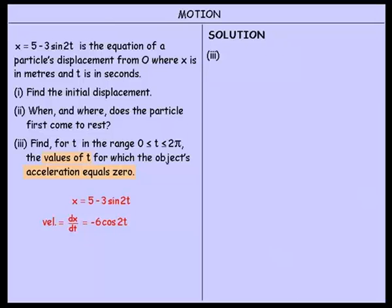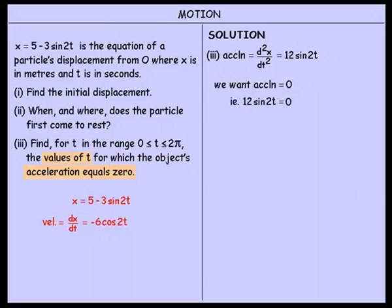Question 3: we're asked to find the values of t for which the acceleration equals 0. The acceleration is the second derivative. Looking at our velocity — the first derivative — if we find the derivative of that, we get 12 sine of 2t. Setting that equal to 0 gives 12 sine 2t equals 0. Dividing by 12 gives sine of 2t equals 0.